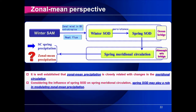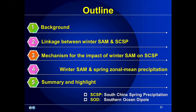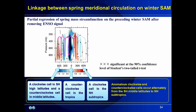We have generally answered our first question about the correlation between boreal winter SAM and spring rainfall over South China. The next question concerns zonal mean precipitation, since it is well known that zonal mean precipitation is closely related to zonal mean meridional circulation. This figure shows the partial regression of spring mass streamfunction on the preceding winter SAM after removing the ENSO signal. Anomalous clockwise and counterclockwise circulations occur alternately from the Southern Hemisphere middle latitudes to Northern Hemisphere subtropics.